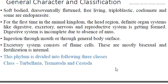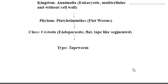This phylum is divided into three classes: Trematoda, and Cestoda. The classification is: Kingdom Animalia, Phylum Platyhelminthes, Class Cestoda. One example animal in this class is the tapeworm, which lives mostly in the small intestine.